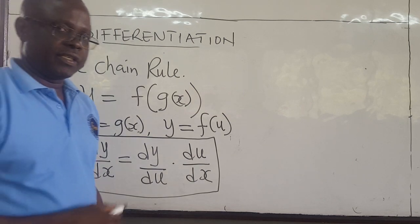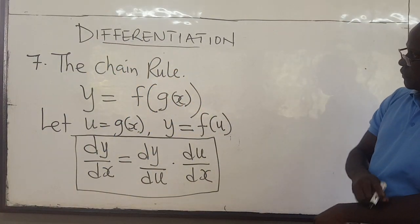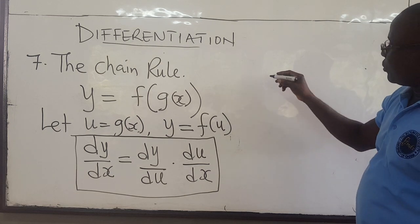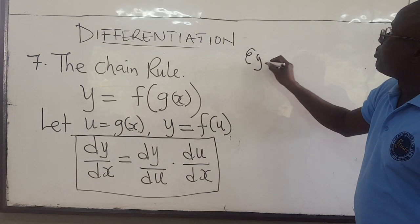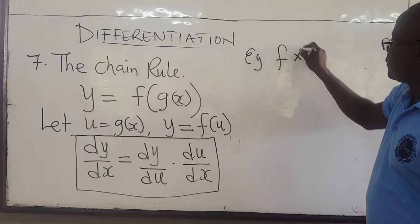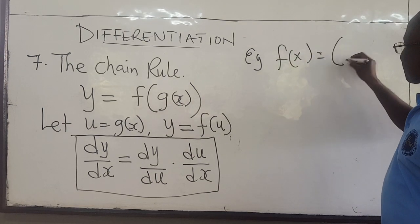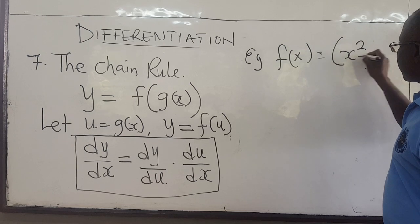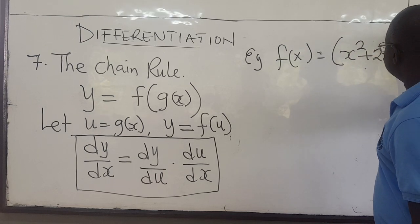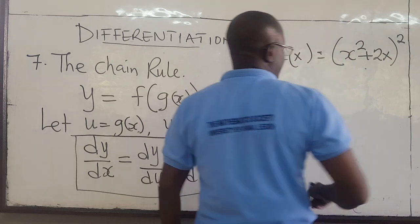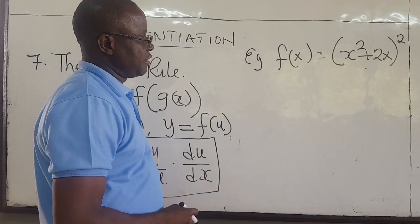You'll come across this and it's very important. Let's do a few examples to illustrate this. Suppose that f of x is equal to x squared plus 2x, all raised to the power 2. How do you find the derivative of that?